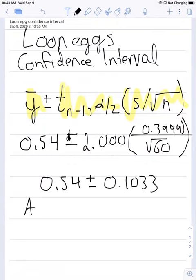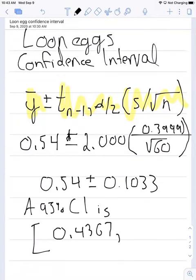We can say that a 95% confidence interval is between these two values. I'm going to put these two values in brackets. Here it's 0.4367 and then a comma 0.6433.